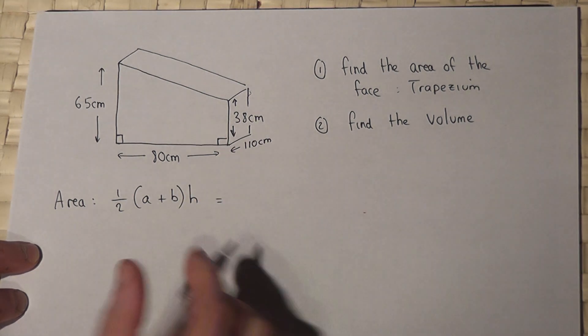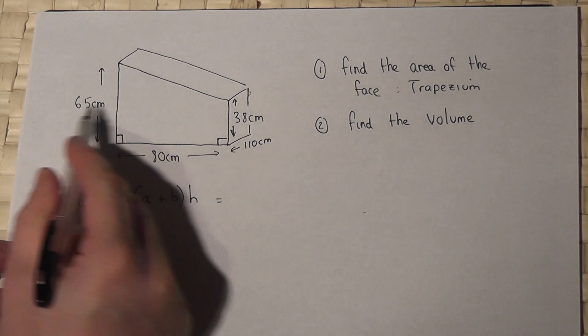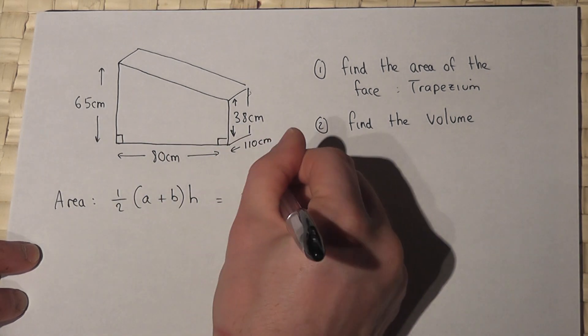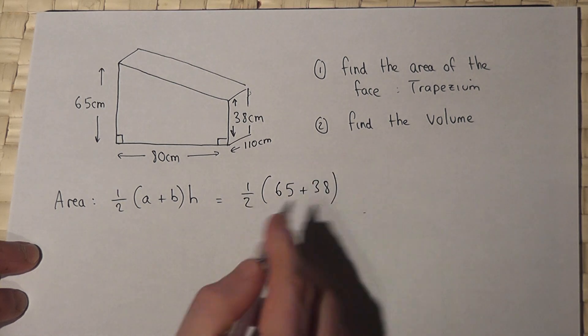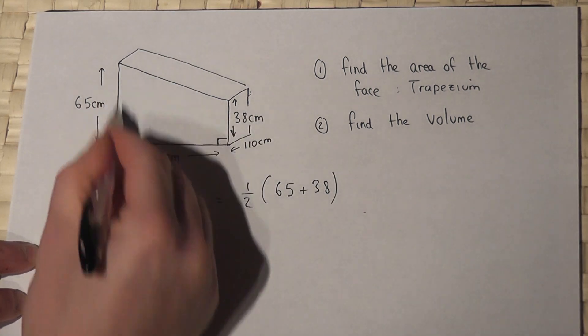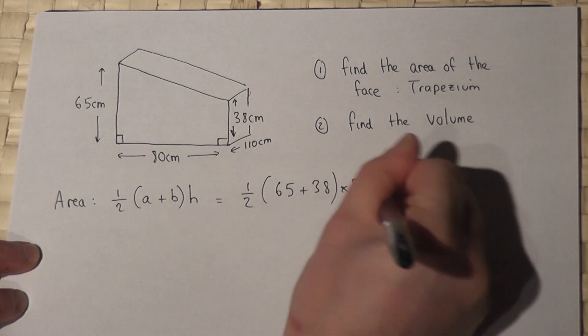So for this trapezium here, A and B are 65 and 38, and H is the distance between those two parallel sides.